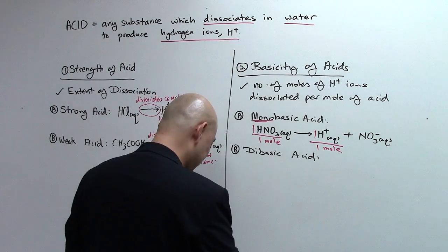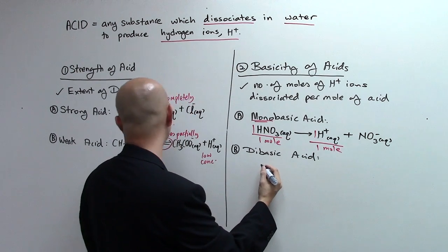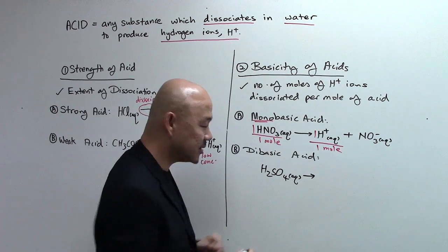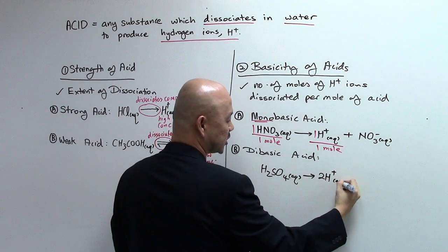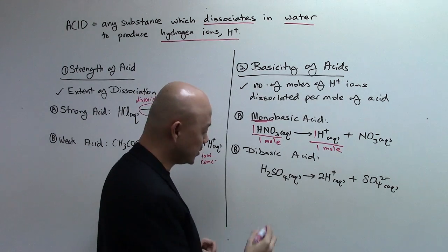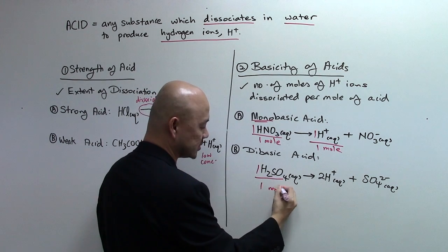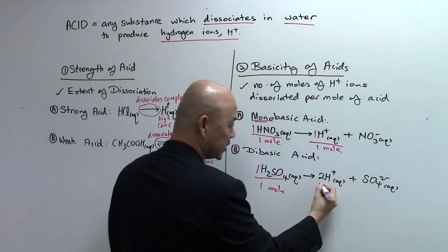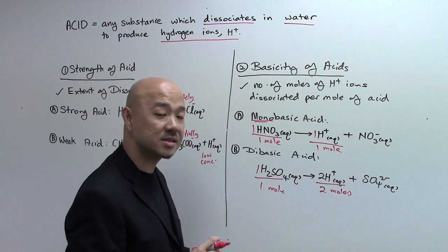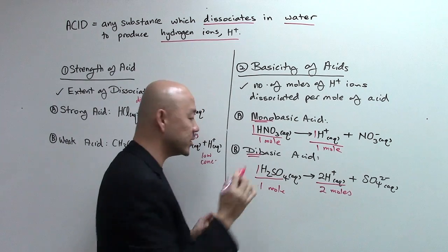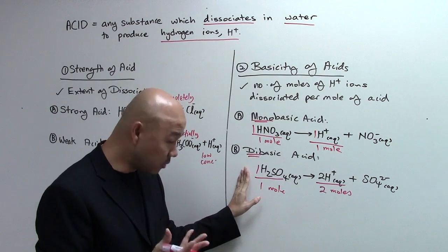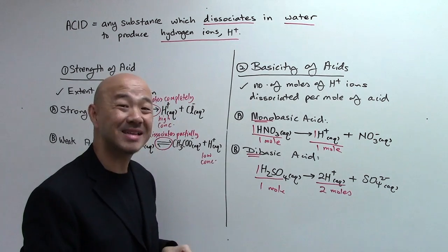For dibasic acid, the example is sulfuric acid, H2SO4. When it dissociates, the equation gives 2H-plus and SO4-2 minus. For every one mole of H2SO4, it dissociates to produce two moles of H-plus ions — that's the reason we call it dibasic. One mole of H2SO4 produces two H-plus ions.